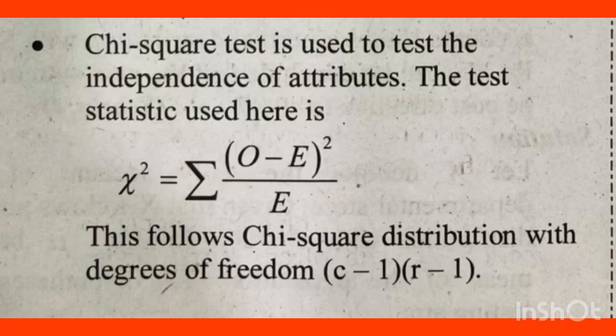You should have a table containing the critical values of the z-test, t-test, and chi-square test. If the calculated value is less than the table value, we accept the null hypothesis. If the calculated value is greater than the table value, we reject the null hypothesis.